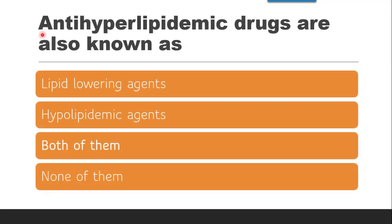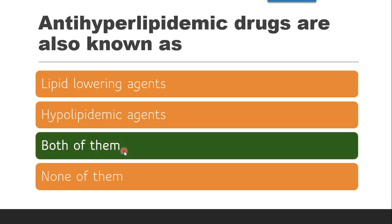The next question is: antihyperlipidemic drugs are also known as what? Hyperlipidemia means increased levels of lipids, and anti-hyperlipidemic means to lower lipids. So they are also known as lipid-lowering agents or hypolipidemic agents — both terms mean the same thing. The correct answer is both of them.